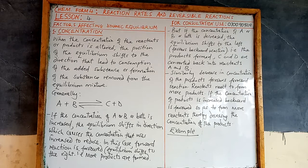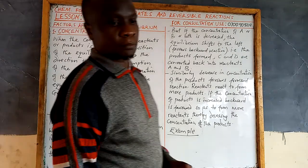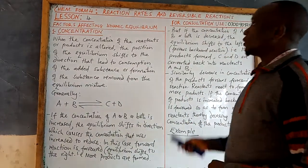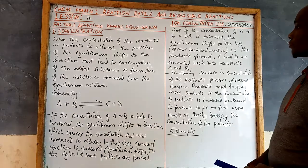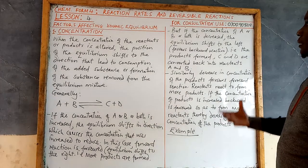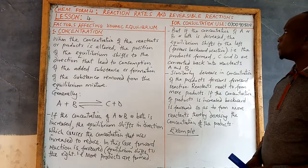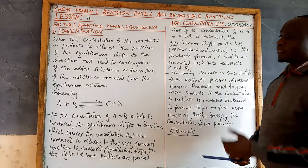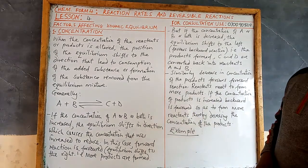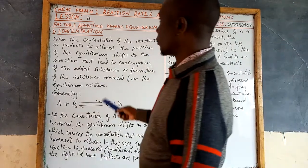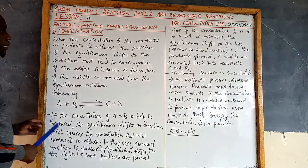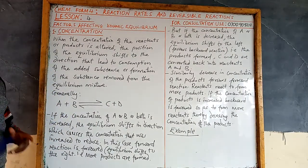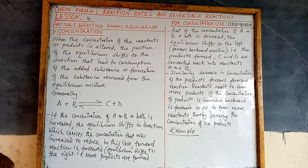Welcome to lesson number four. We are going to proceed from where we left off in lesson number three, where we discussed equilibrium reactions and mentioned the factors which affect dynamic equilibrium: concentration, temperature, pressure, and catalyst. We are going to discuss each of those factors one by one in detail.